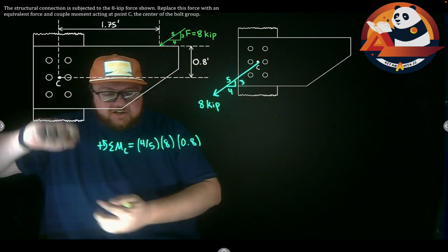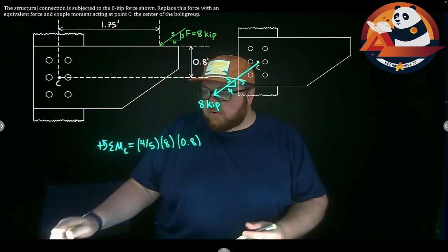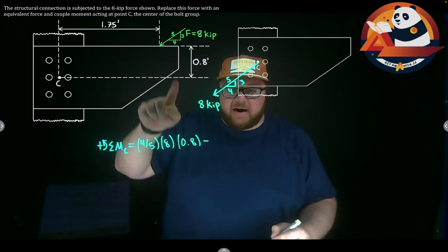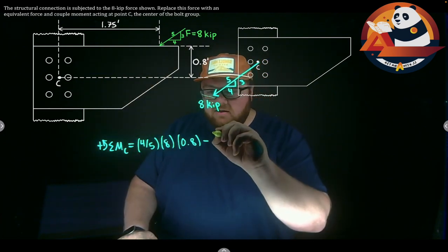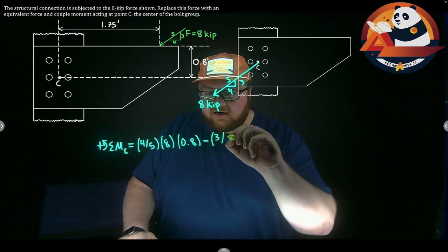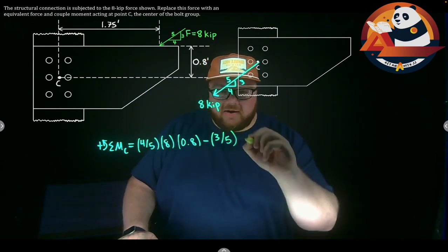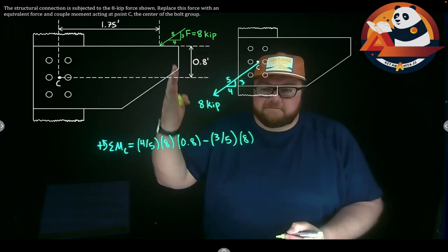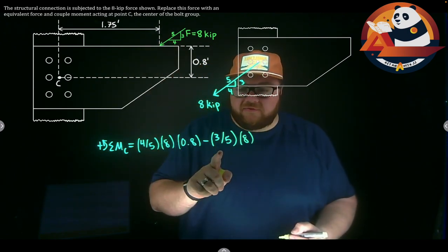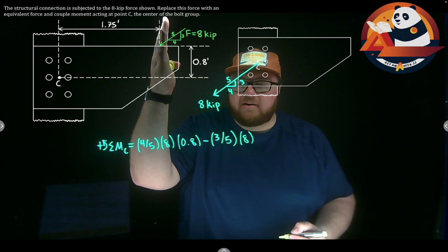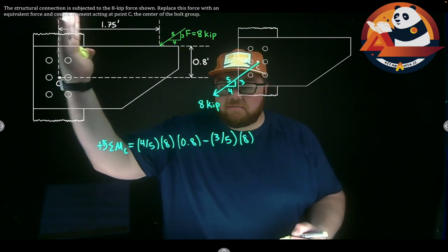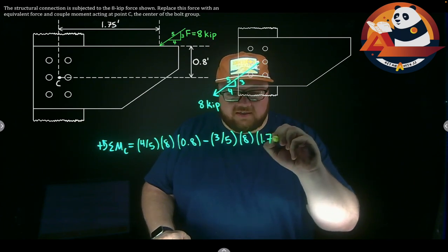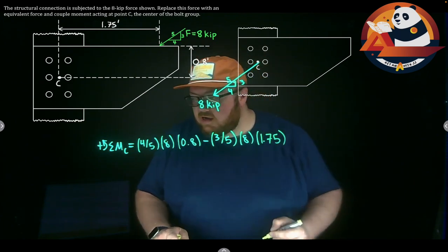Now I'll check the Y component. The Y component will be going straight down. If we pin our paper at C and pull straight down, we start to get a clockwise rotation, so I subtract this off. Minus F_y times d_x, minus three-fifths, the Y leg of our triangle divided by the hypotenuse, times the magnitude of our force, three-fifths times eight, times the X distance from C to the force, which is 1.75 feet.